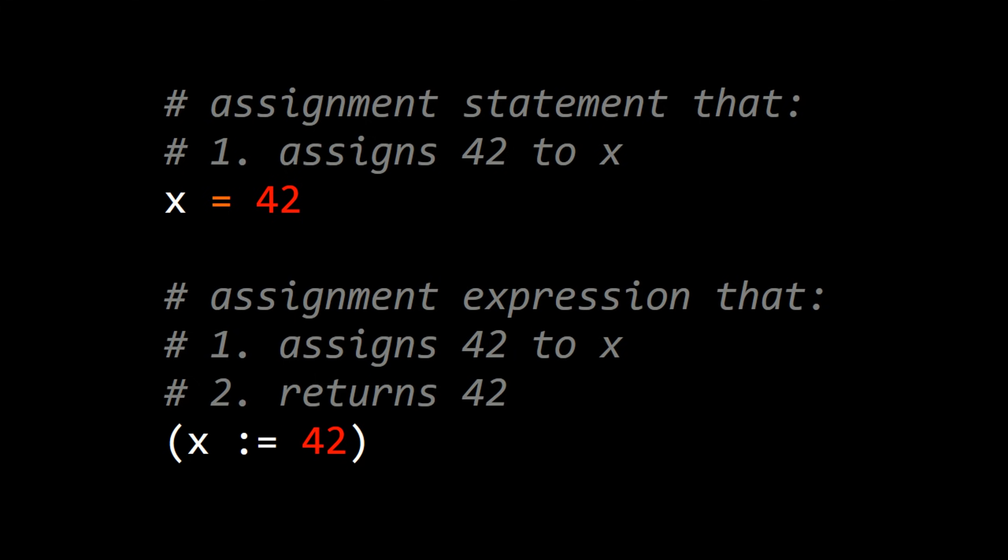So what is it? First, let's talk about the assignment statement, the equal sign in Python. We can thank Fortran for this, I think, not very good design decision of using the equal sign for assignment. So assigning, in this case, 42 to the variable x.